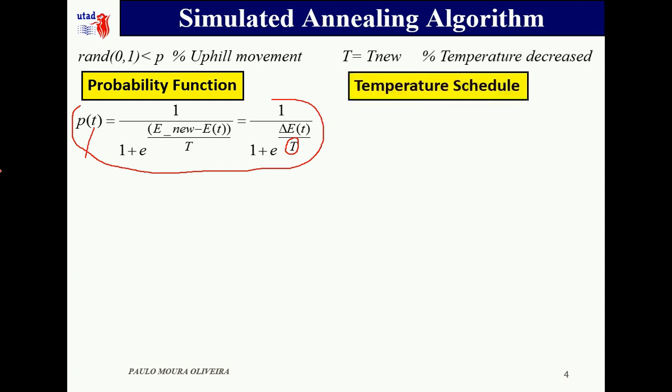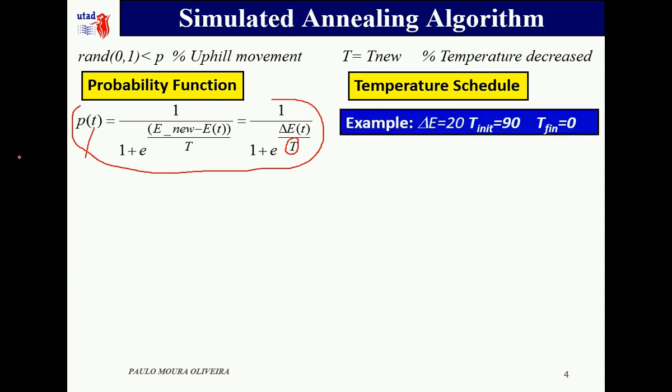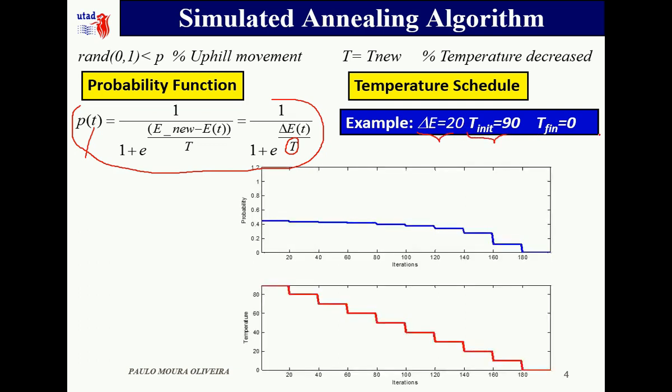You are going to see what is the type of temperature schedule in a particular case. We are going to consider ΔE constant and positive equals 2, initial temperature equals 90, and final temperature zero. We have an example obtained with this law. In this case the temperature is decreased every 20 iterations in a stepwise decreasing manner. Also the initial value in this case will be a little higher than 0.4, so in the beginning of the search there will be almost 50% of chances for an uphill solution to be accepted.